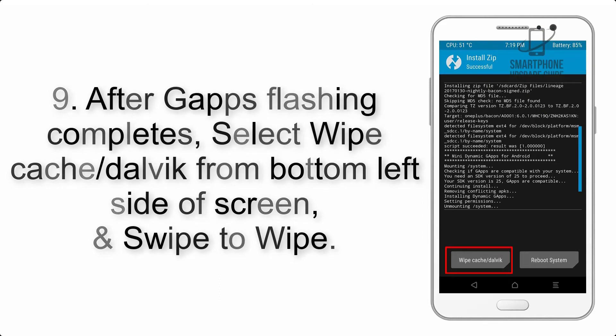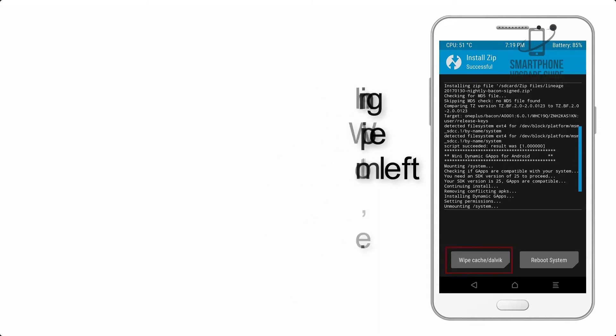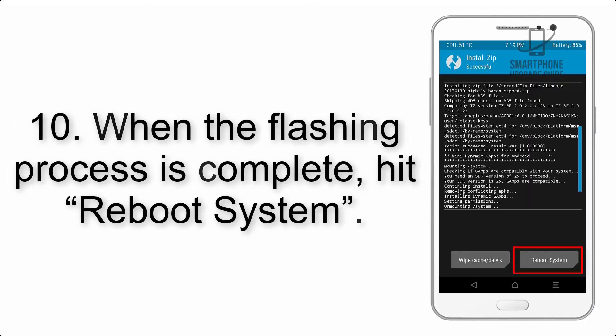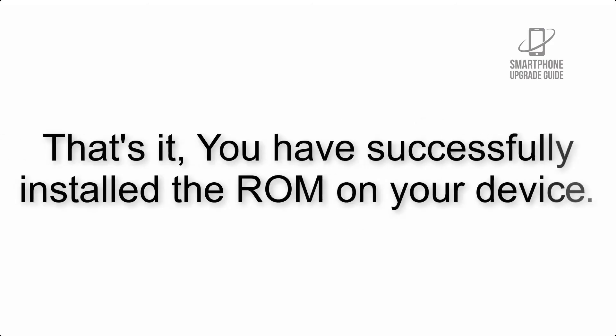From the bottom left side of the screen, swipe to wipe. Step 10: When the flashing process is complete, hit Reboot System. That's it — you have successfully installed the ROM on your device.